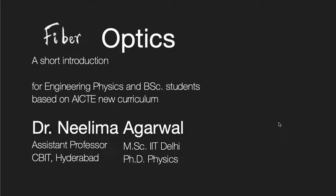Welcome back to another lecture on fiber optics. In the last lecture we studied a very important property of an optical fiber, that is numerical aperture. We saw that numerical aperture defines the sine of the maximum angle which the incident ray makes with an optical fiber in order to undergo total internal reflection. It can also be defined as the light gathering capacity of an optical fiber.